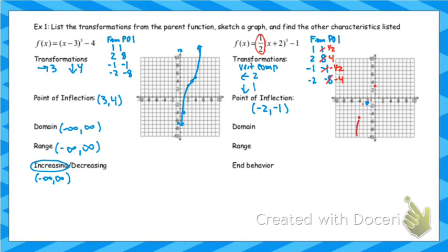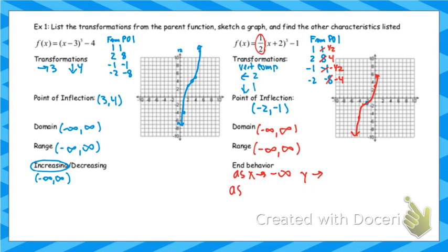That gives enough points to sketch the graph. Domain and range are both negative infinity to infinity. For end behavior: as x approaches negative infinity, y is getting smaller (approaching negative infinity); as x approaches positive infinity, y is getting bigger (approaching positive infinity).